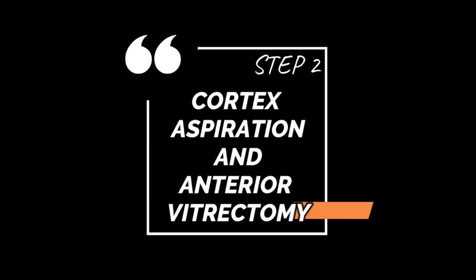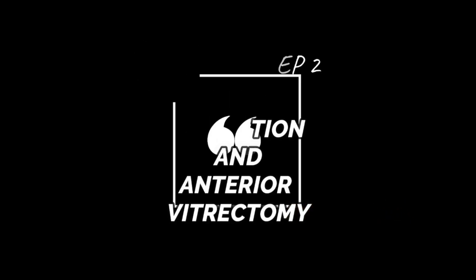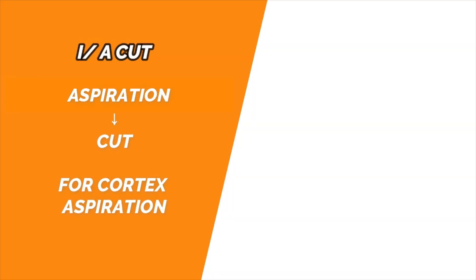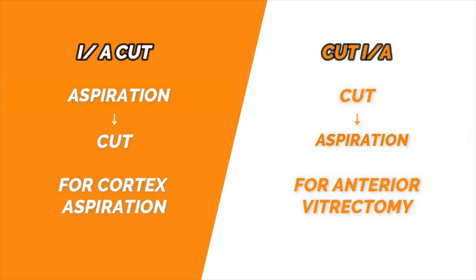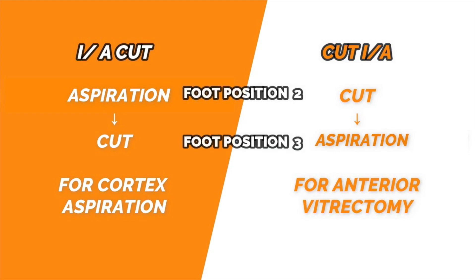Before proceeding with anterior vitrectomy, it is useful to understand the two modes of vitrectomy: IA-cut and cut-IA. In both modes, foot position 1 is irrigation. In IA-cut mode, foot position 2 is aspiration followed by cutting in foot position 3. In cut-IA mode, foot position 2 is cut followed by aspiration in foot position 3.